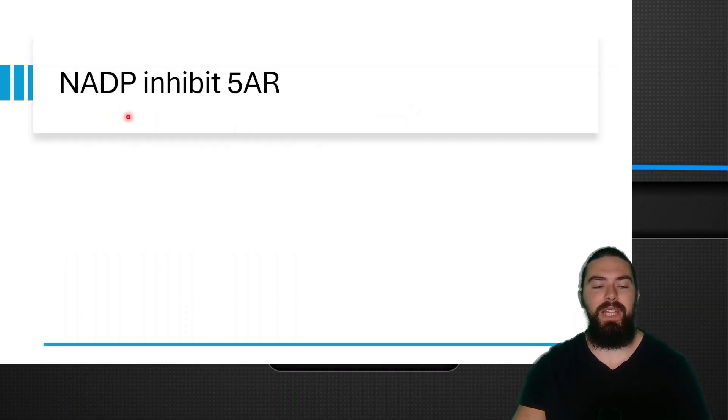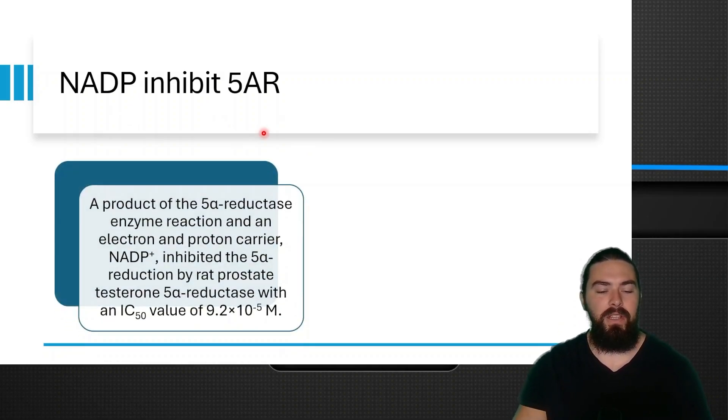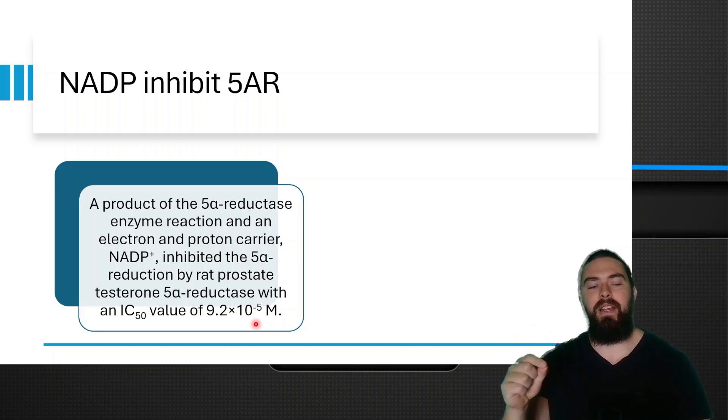So here is NADP inhibit 5-alpha reductase. So a product, and this is from the study, a product of a 5-alpha reductase enzyme reaction, an electron and proton carrier, NADP inhibited 5-alpha reductase by rat prostate testosterone, with a potency of this number right here. So NADPH is a cofactor, but NADP inhibits that enzyme.